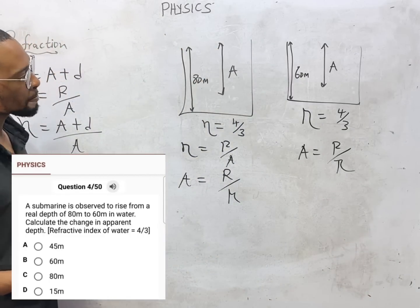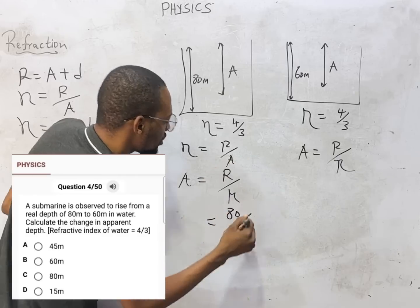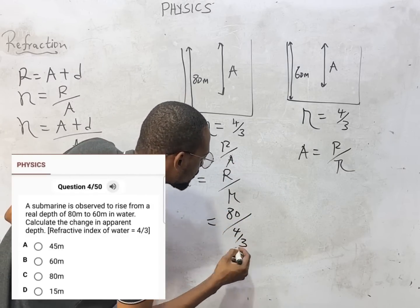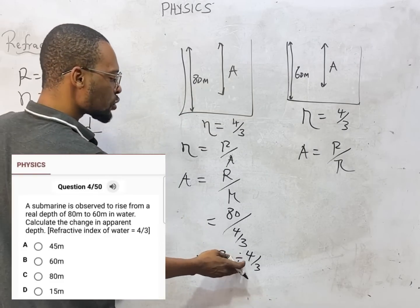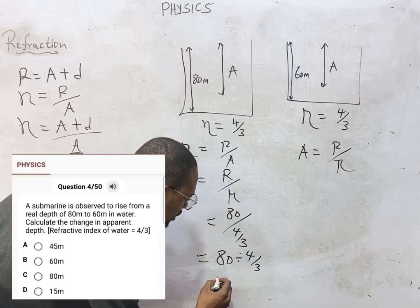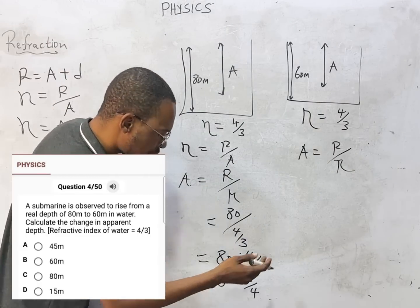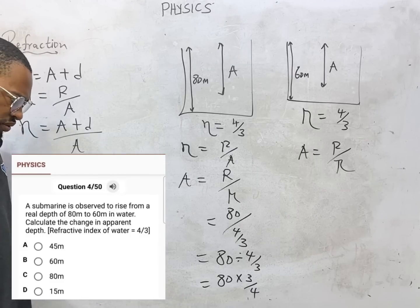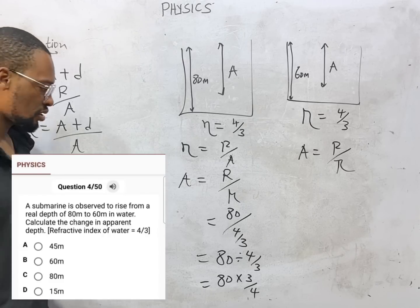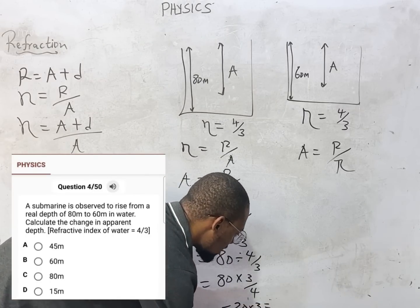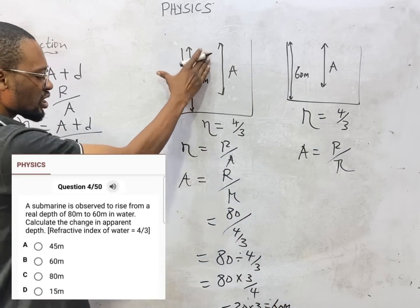For case A: apparent depth equals real depth over refractive index, which is 80 divided by 4 over 3. Dividing by a fraction means multiplying by its inverse, so this is 80 times 3 over 4. Eighty divided by 4 is 20, so the result is 20 times 3, which equals 60 meters. The apparent depth in case A is 60 meters.